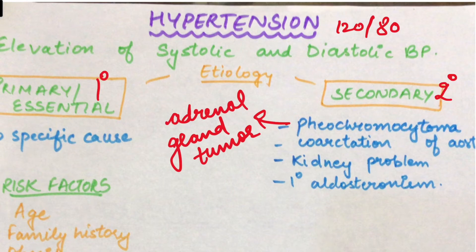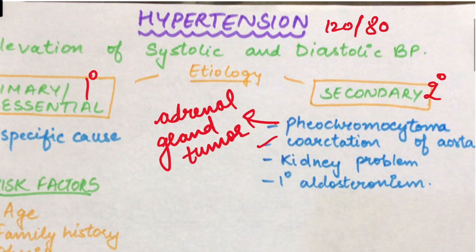Second secondary cause is coarctation of aorta. Coarctation ka matlab hai congenitally narrowing ho jana — jaisi normal aorta thi aur ek jagah se narrowing ho jaye. So this is coarctation.